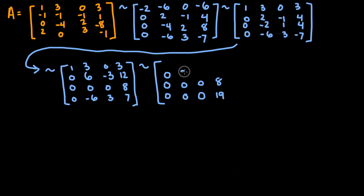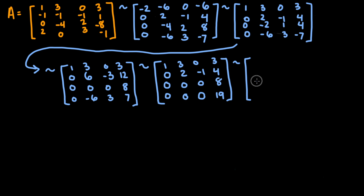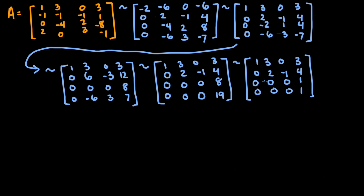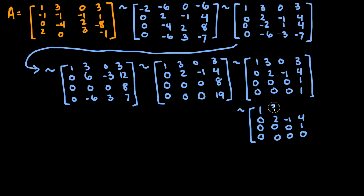We simplify rows 3 and 4 by dividing by 8 and 19 respectively, giving 0, 0, 0, 1 in both rows. The remaining rows stay as 0, 2, negative 1, 4 and 1, 3, 0, 3. To further row reduce, we replace row 4 with the difference of row 3 and row 4: 0 minus 0 = 0, 0 minus 0 = 0, 0 minus 0 = 0, 1 minus 1 = 0. So row 4 becomes 0, 0, 0, 0. The matrix now has rows: 1, 3, 0, 3; then 0, 2, negative 1, 4; then 0, 0, 0, 1; then 0, 0, 0, 0.